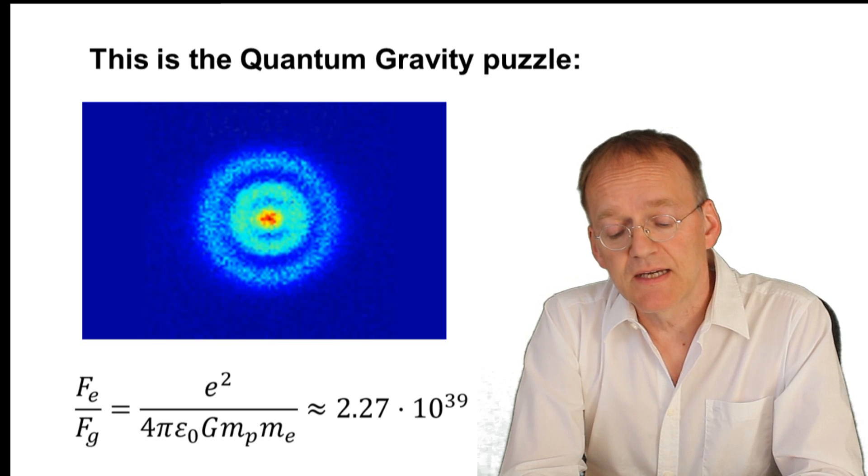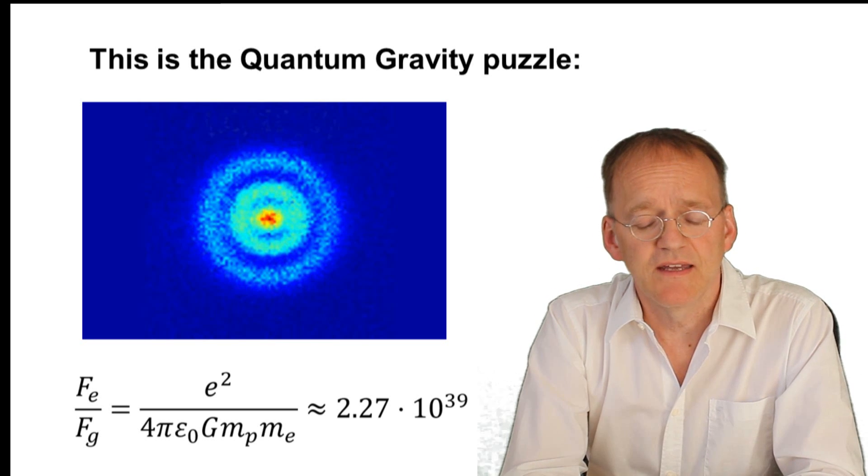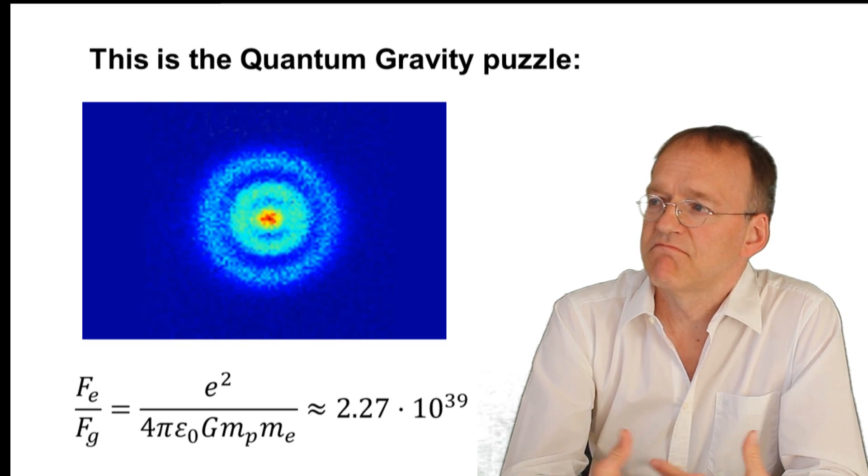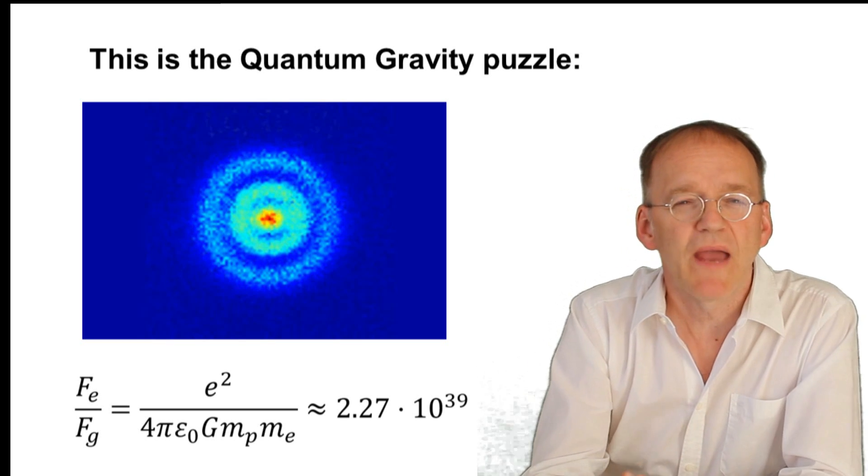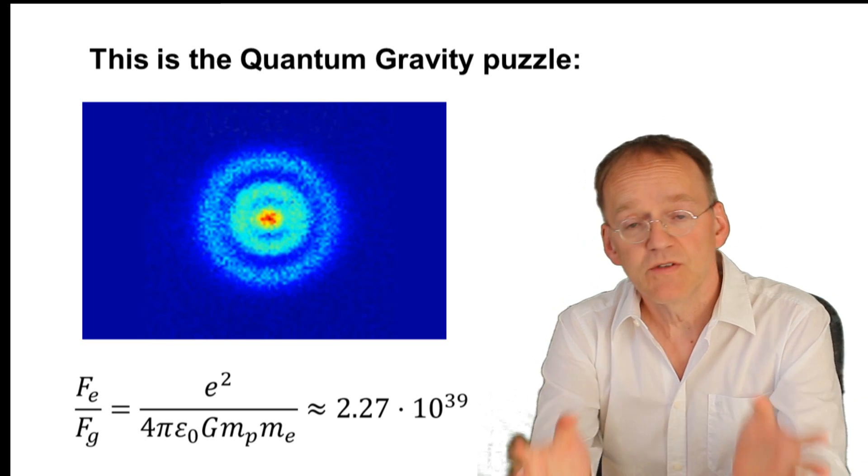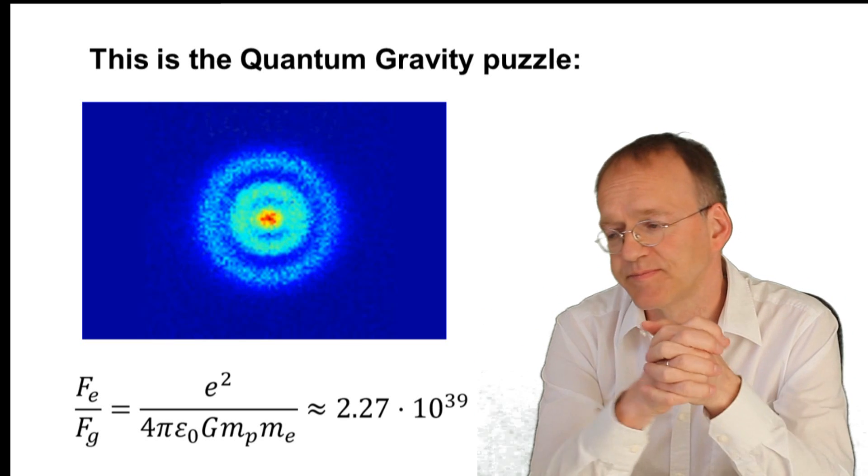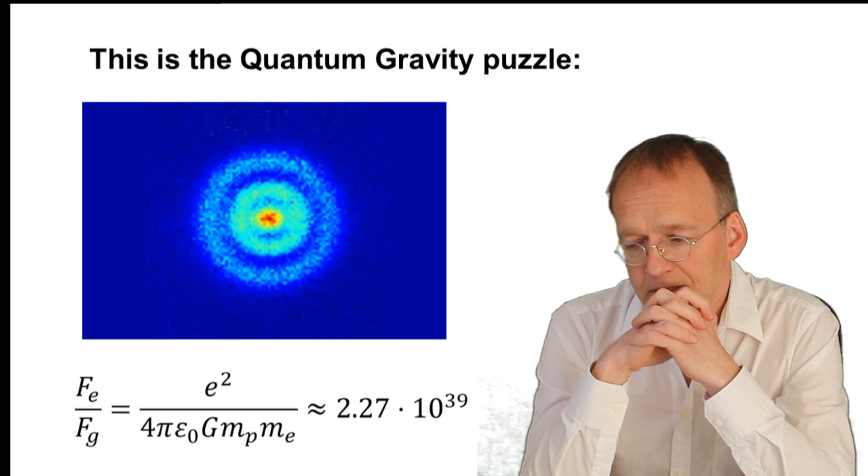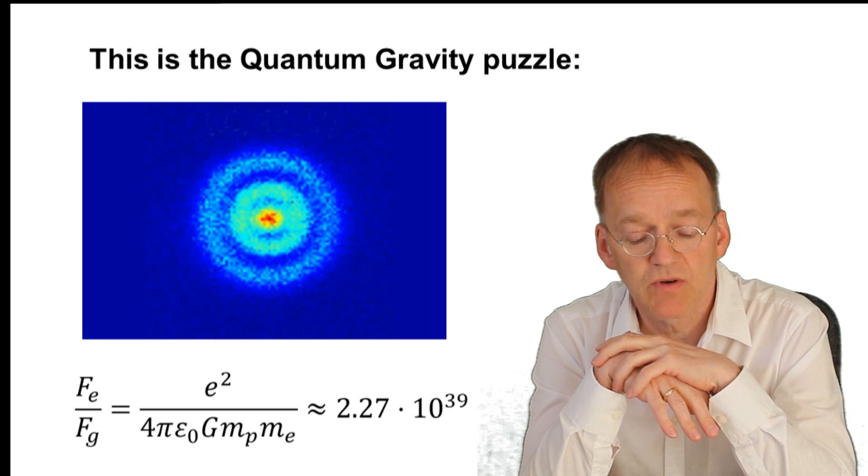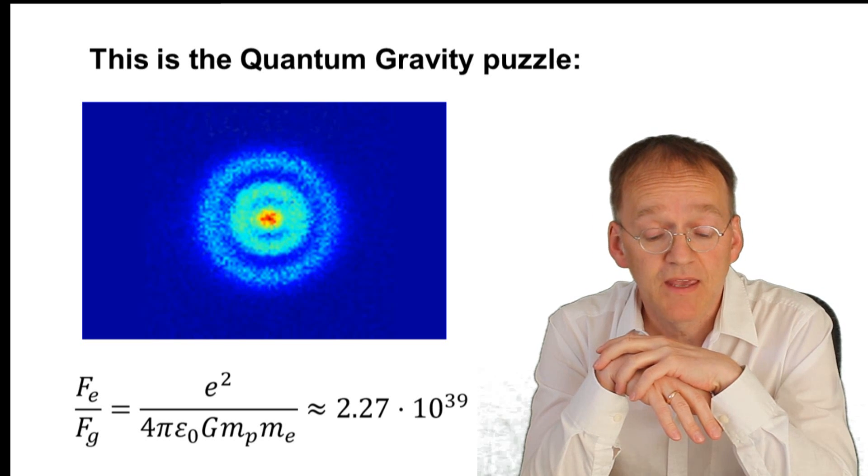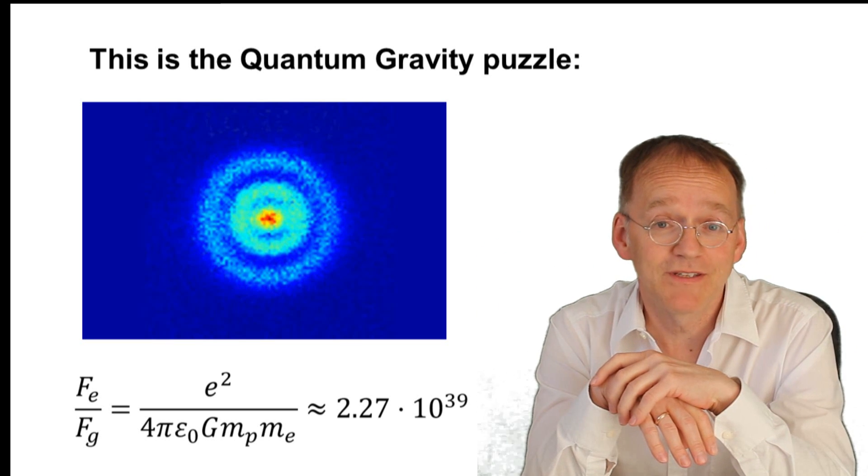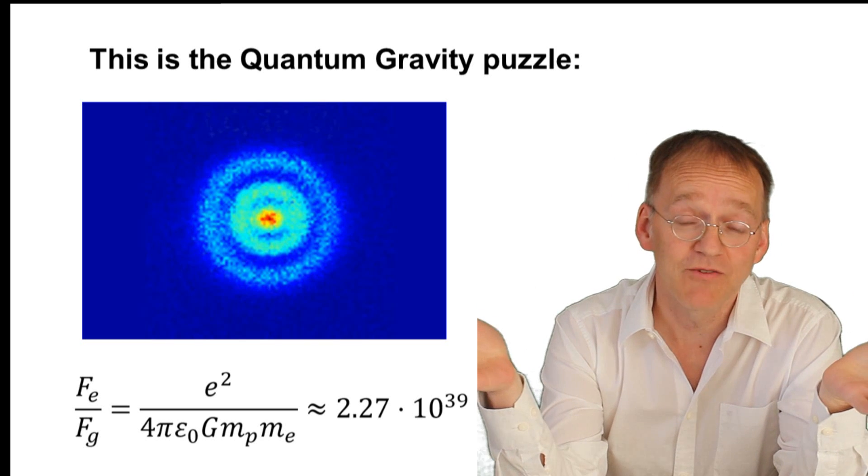And that's an incredible puzzle. Dirac was really devastated—he just couldn't make up his mind how any reasonable mathematics should produce such a huge number, because his idea was a theoretical physicist has to predict numbers. So I think this is the correct approach to tackle the quantum gravity riddle. As a physicist, if you come up with a new theory of quantum gravity, either you predict this number or you better shut up. It's as simple as this.